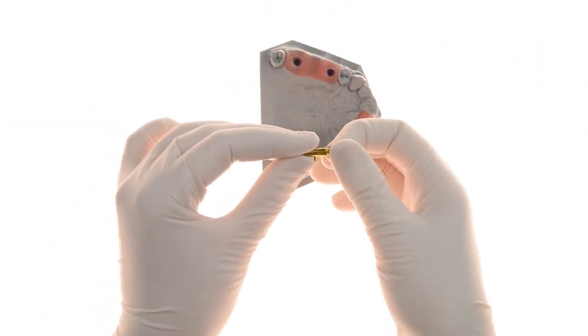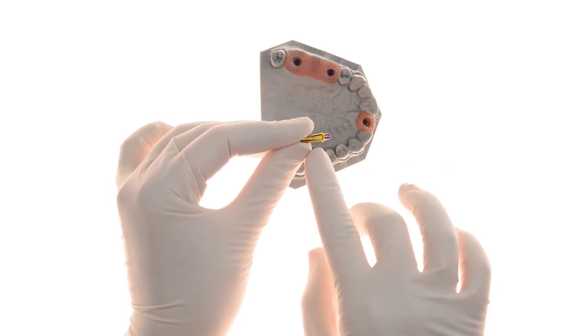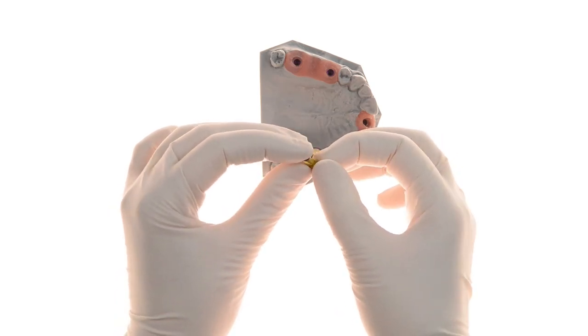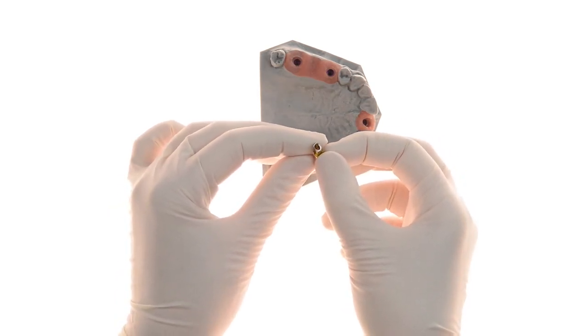For the adjustable EasyBase, the 10mm pillar may be customized to the desired length. Here you can see the EasyBase post adjustment. Once customized, the adjustable EasyBase is directly scanned.